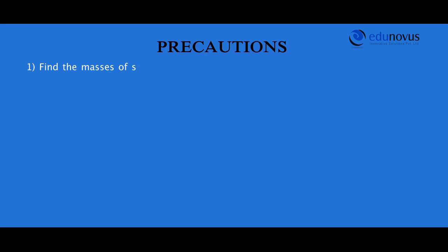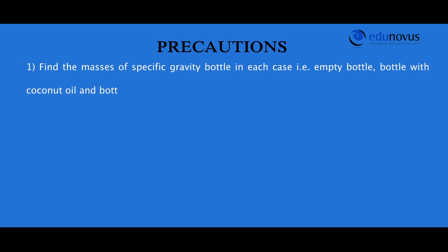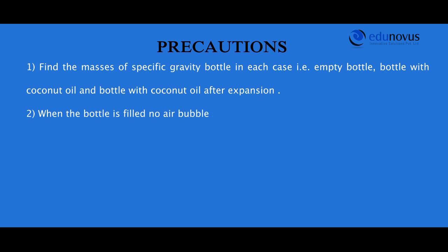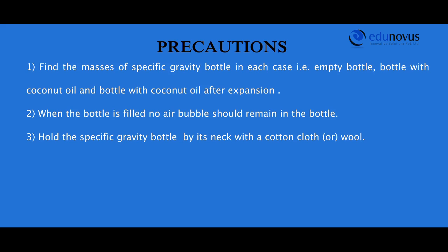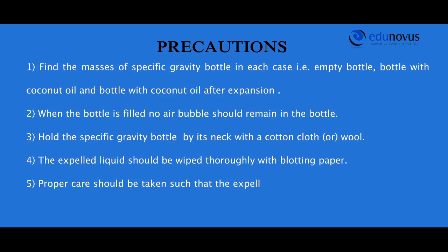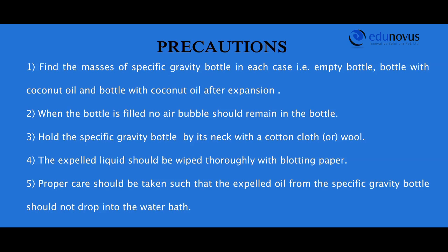Precautions: Find the masses of the specific gravity bottle in each case — empty bottle, bottle with coconut oil, and bottle with coconut oil after expansion. When the bottle is filled, no air bubbles should remain. Hold the specific gravity bottle by its neck with a cotton cloth or wool. The expelled liquid should be wiped thoroughly with blotting paper. Proper care should be taken so that the expelled oil does not drop into the water bath.